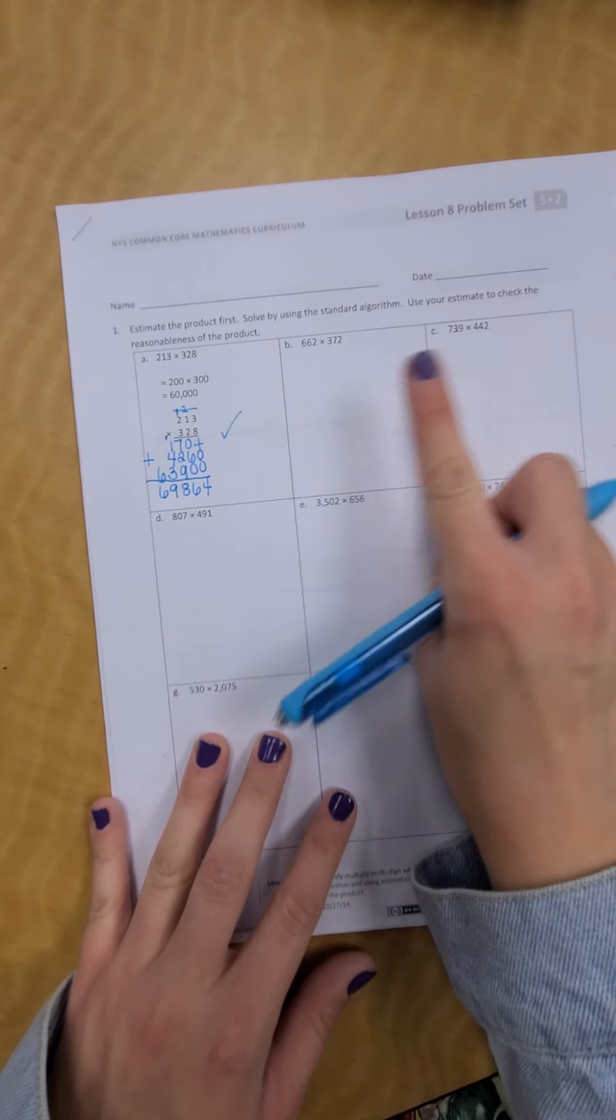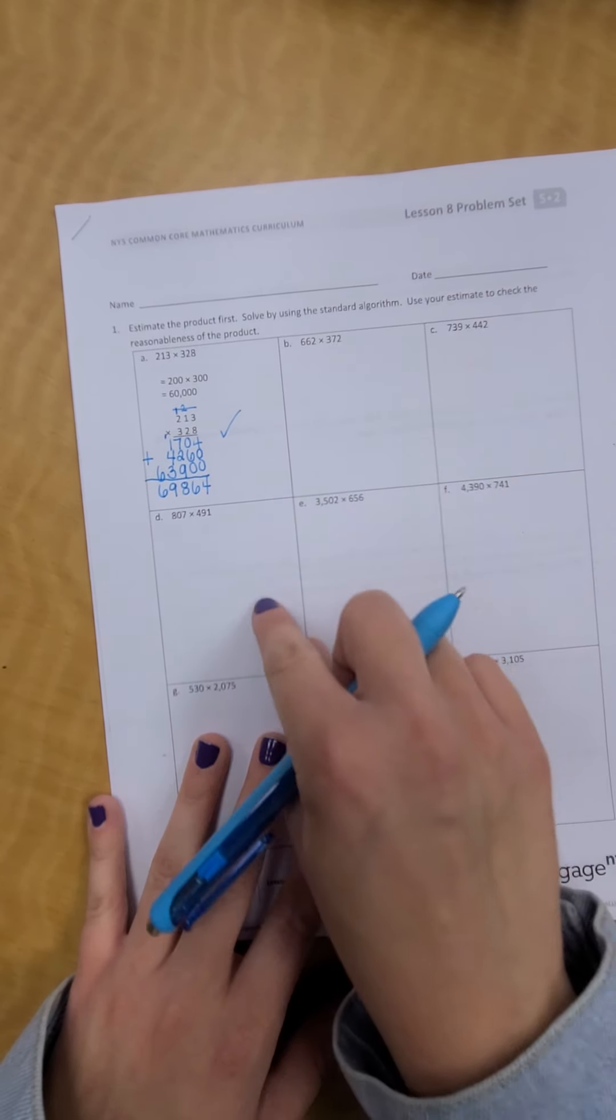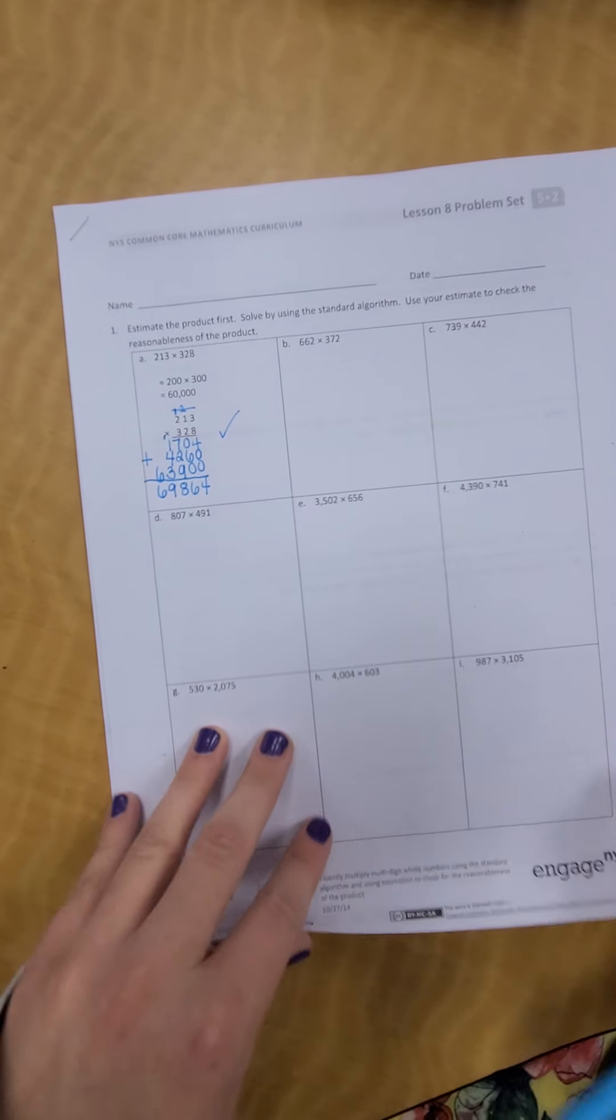So, then you're going to do all of these. B, C, D, E, F, G, H, I.